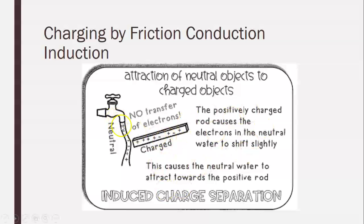Same thing with water. If you run just a faucet of water, and then once again if you charge something that is made out of iron or metal, you can actually get the water to wave back and forth, back and forth. So this one says here: attraction of neutral objects to charged objects. The positive charged rod - see all the positive charges - causes the electrons in the neutral water to shift, and so it's going to be pulled to it. This causes the neutral water to attract towards the positive rod.